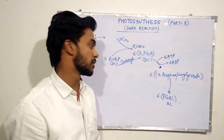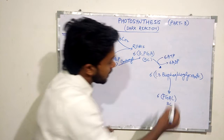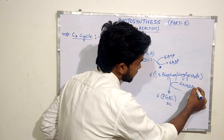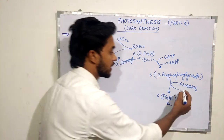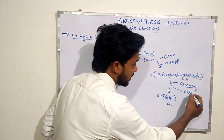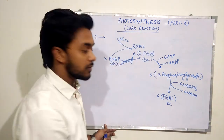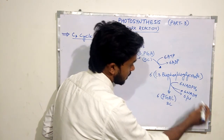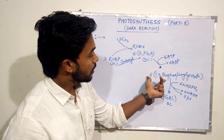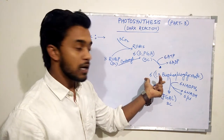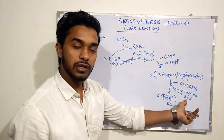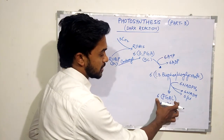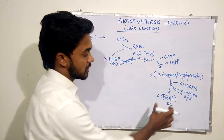PGAL is a three-carbon compound. In this reduction step, six molecules of NADPH2 are used, which get oxidized to 6 NADH, and six inorganic phosphates are also released. In this compound, total 12 phosphate groups were present, but in the reduction step six inorganic phosphates are released out. Now six molecules of PGAL are formed.